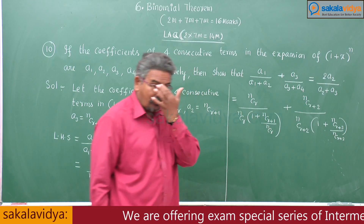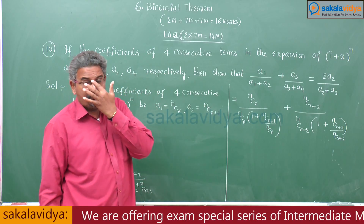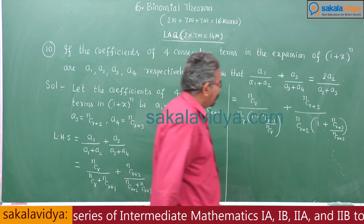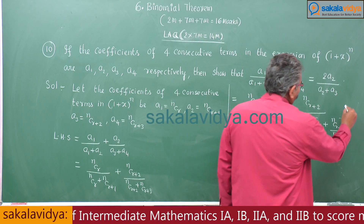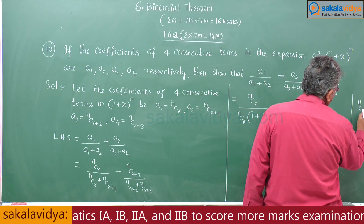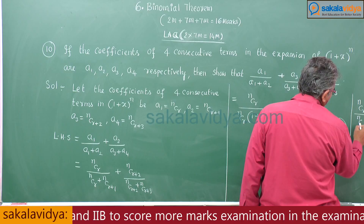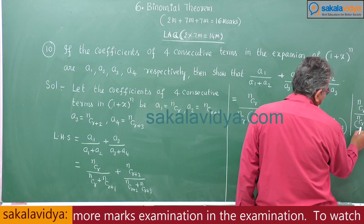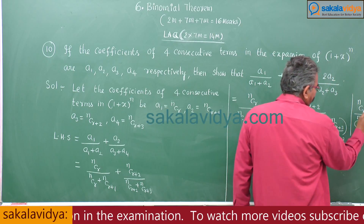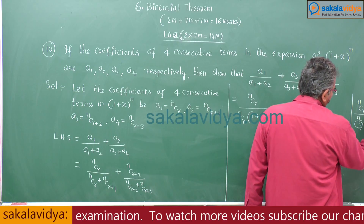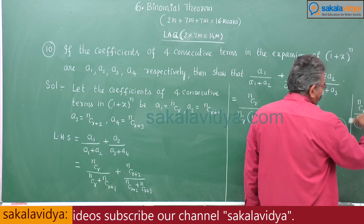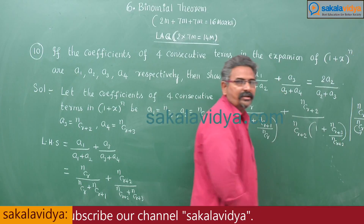There is a very important technique to solve this kind of problem. We have the formula: nCr / nCr-1 = (n − r + 1) / r. This shortcut is also very useful for engineering entrance examinations.